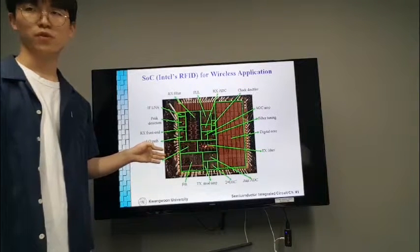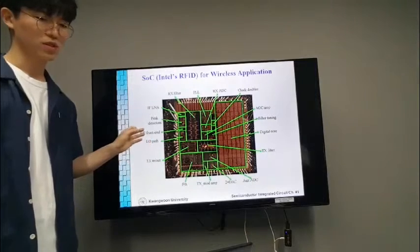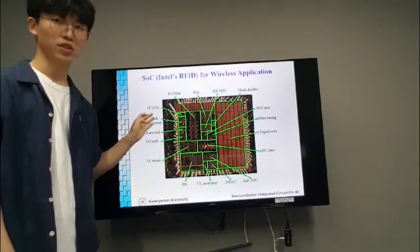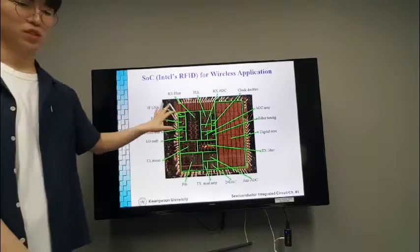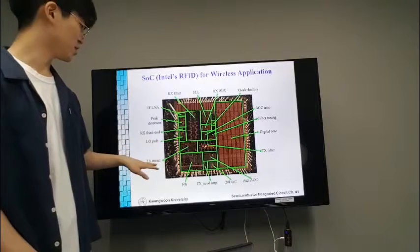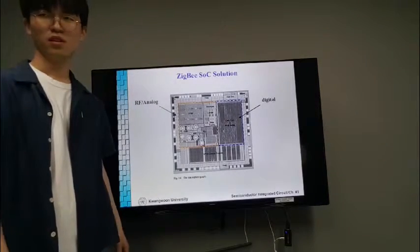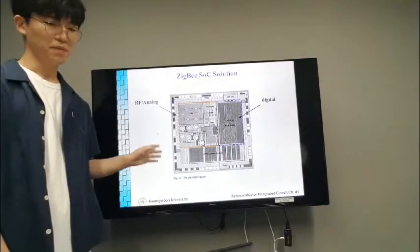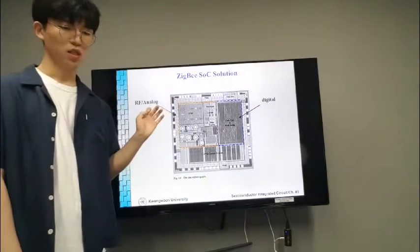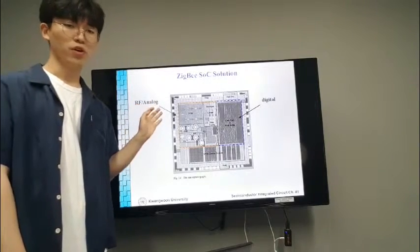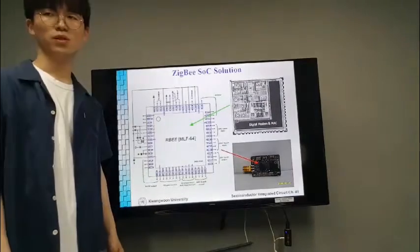And this is SOC for wireless application. SOC is system-on-chip. SOC includes the computer and all the necessary additional electronic components. As you can see, so many components like RF filter, low-pass, tuner, and so on are in one chip. ZigBee means compound work between ZigBee and Bluetooth. ZigBee solution needs low power and we can communicate in wide range.